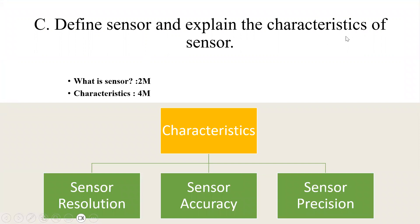Define sensor and explain the characteristics of sensor. Write what a sensor is — how it is sensing, why a sensor is needed, how it is monitoring the data, from where the data is driven — which will be 2 marks. For the characteristics, write about resolution, accuracy, and precision: what is resolution, what is accuracy, what is precision, and why we need to consider these for a sensor. That will have 4 marks weightage, for a total of 6 marks.